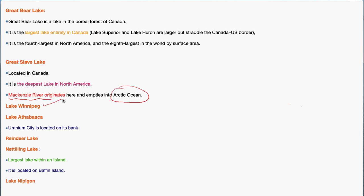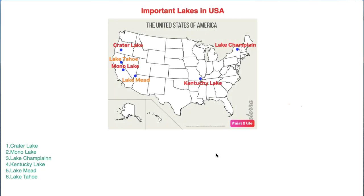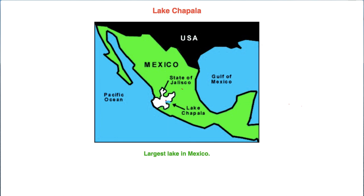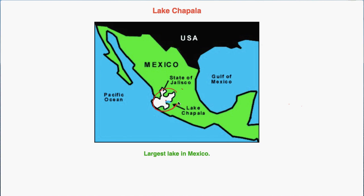Other important Canadian lakes include Lake Winnipeg, Athabasca, Reindeer, Nettilling, and Nipigon. Now we will also see some important lakes in the USA. The Great Salt Lake is an important lake in the USA. Additionally, Lake Chapala is the biggest lake of Mexico. So with this, we have covered the major lakes of North America in this video.